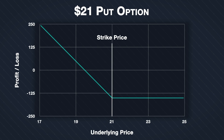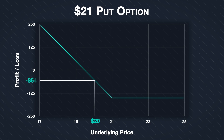In example three in the previous lecture, we bought an SLV put option with a strike price of $21, and then it expired with the price of SLV at $20, which is below our strike price. This means the option had an intrinsic value of $1. However, because we paid a $1.54 premium for the option, we lost $0.54 per share on the trade overall.